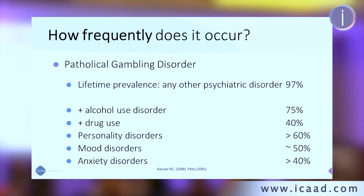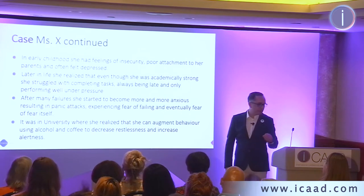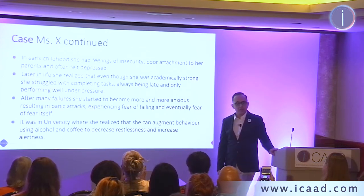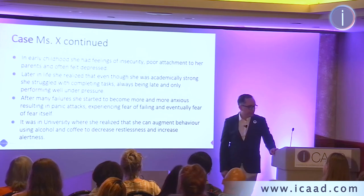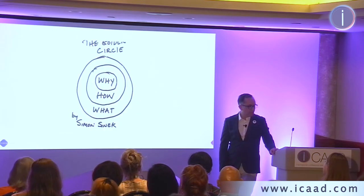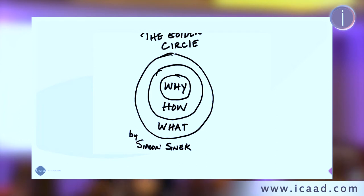Back to Mrs. X. In her childhood she already discovered feelings of depression and insecurity. She was poorly attached to her parents — her father was very strict and punitive, her mother not really emotionally available. Later in life she had poor self-esteem, struggled to complete tasks, was always late, only performing under pressure. She failed in school and was in her eighth year of a four-year architecture program. What's important in dual diagnosis is to look at the why. As Simon Sinek says, you must always start with the why.